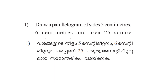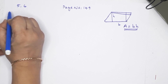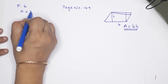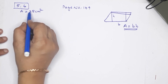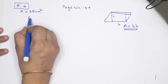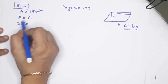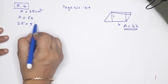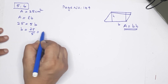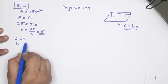Draw a parallelogram of side 5 cm, 6 cm and area 25 cm². I have a parallelogram of side 5 and side 6, and area 25 cm². Length × breadth is equal to area. This area 25 cm² is divisible by 5. Breadth is equal to 25 by 5, that is equal to 5. L is equal to 5, breadth is 5. Rectangle.